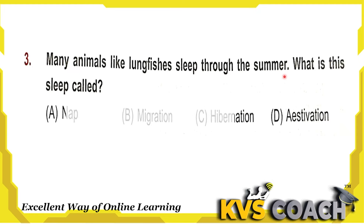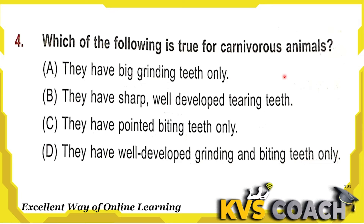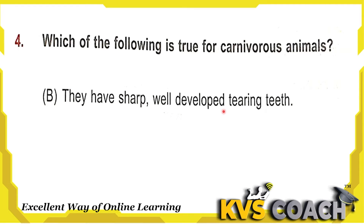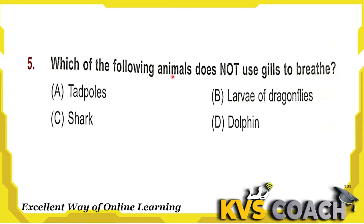The right answer is option D — estivation. Next question: which of the following is true for carnivorous animals? Option A — they have big grinding teeth only — no, that is for herbivorous animals. Option B — they have sharp, well-developed tearing teeth — yes, this is right; they need sharp teeth for tearing meat. Option C — they have pointed biting teeth only — they do, but not only those. Option D — they have well-developed grinding and biting teeth only — no, they have pointed canine teeth too. So the right answer is option B.